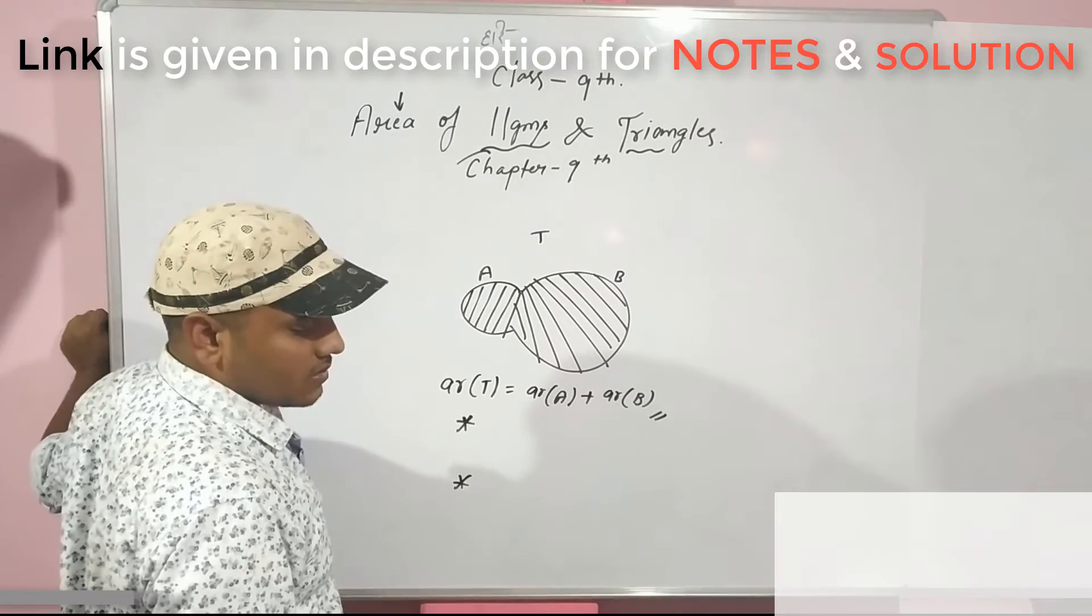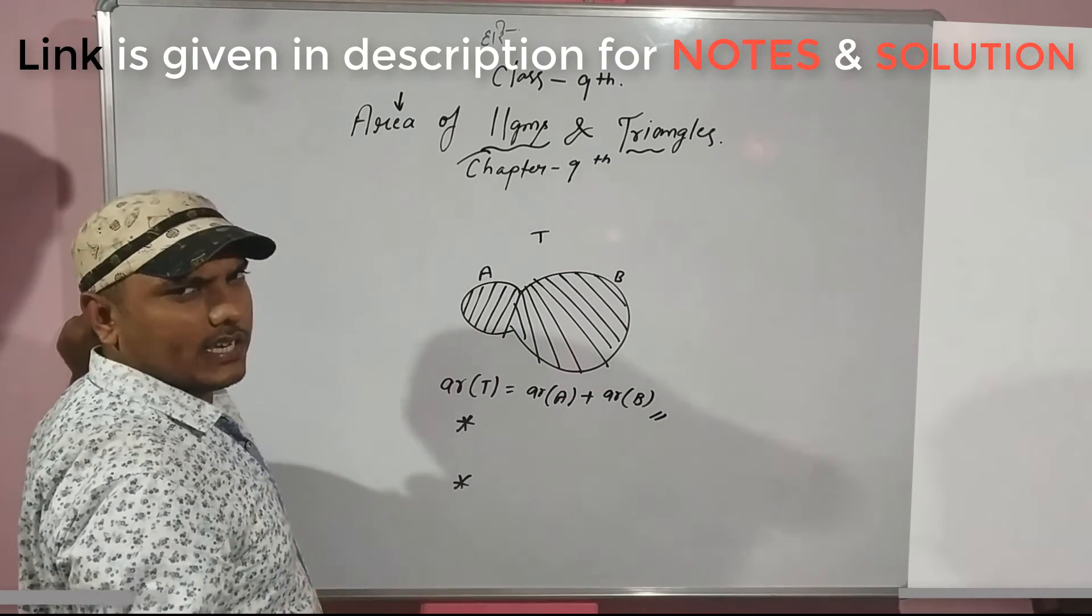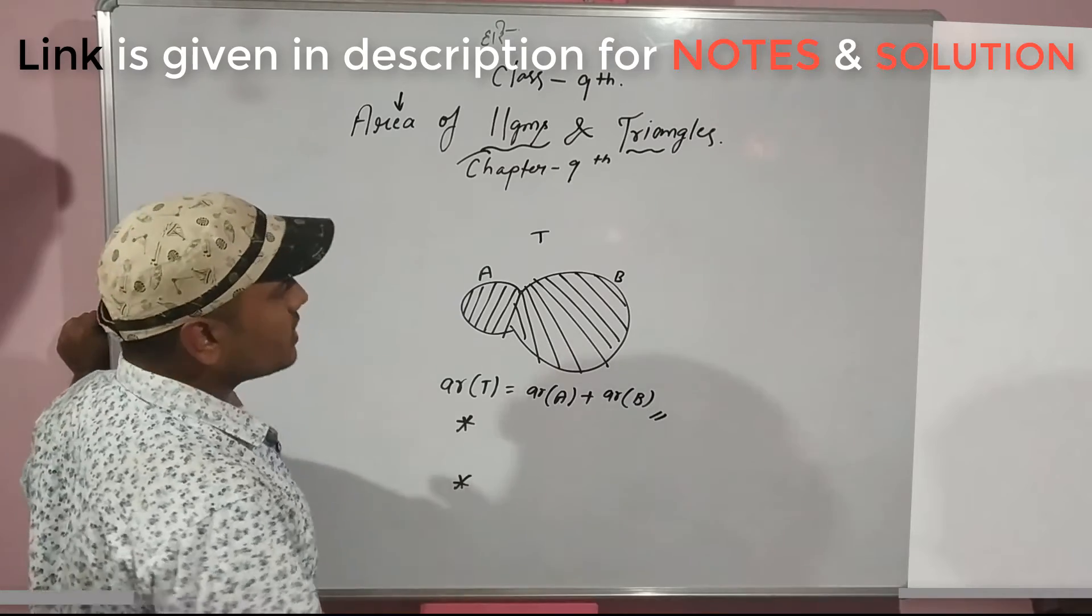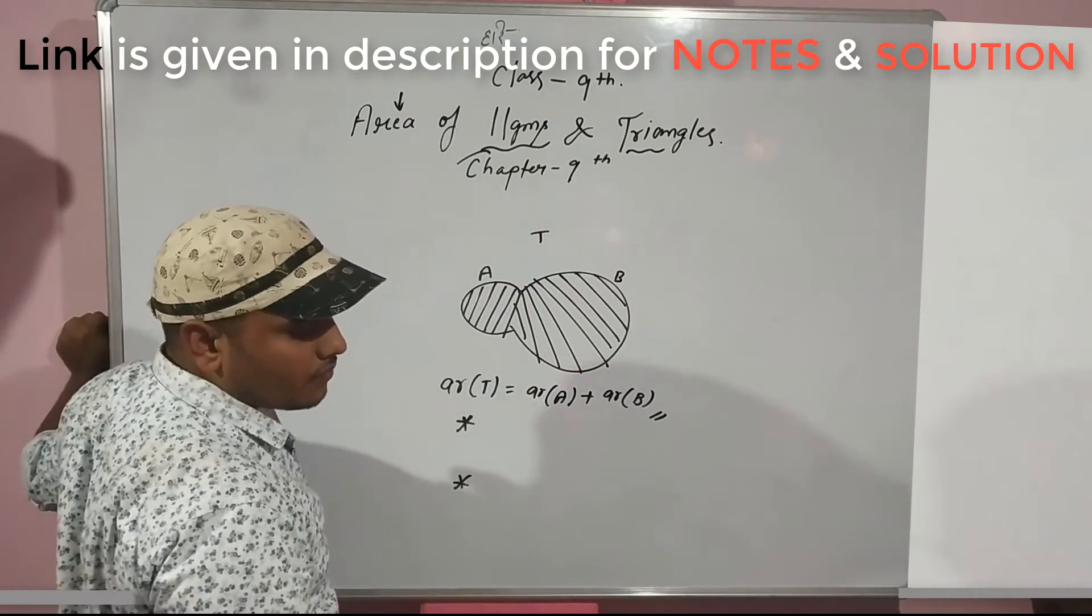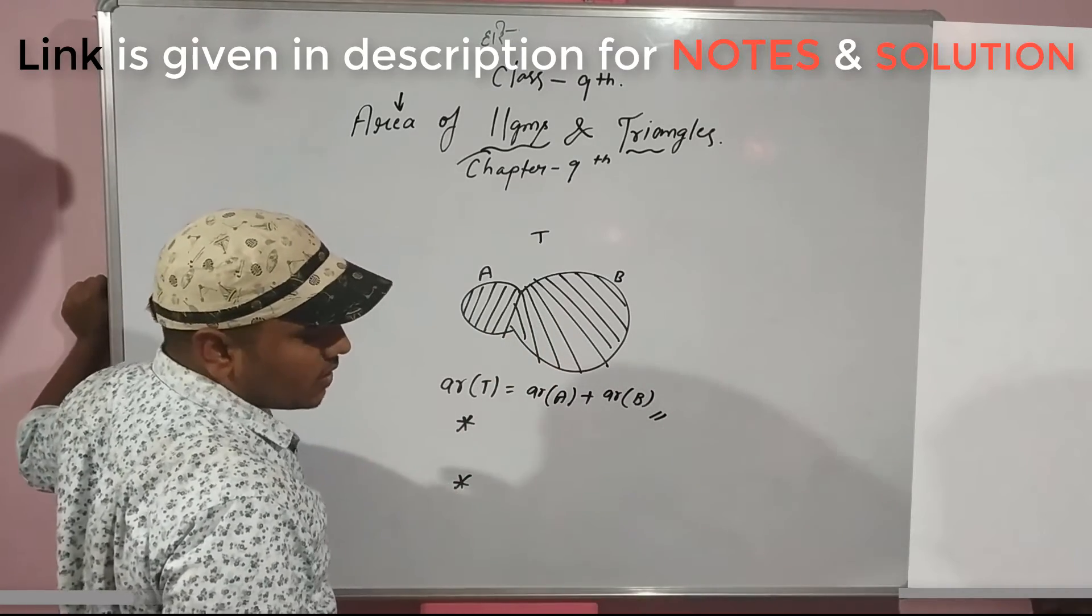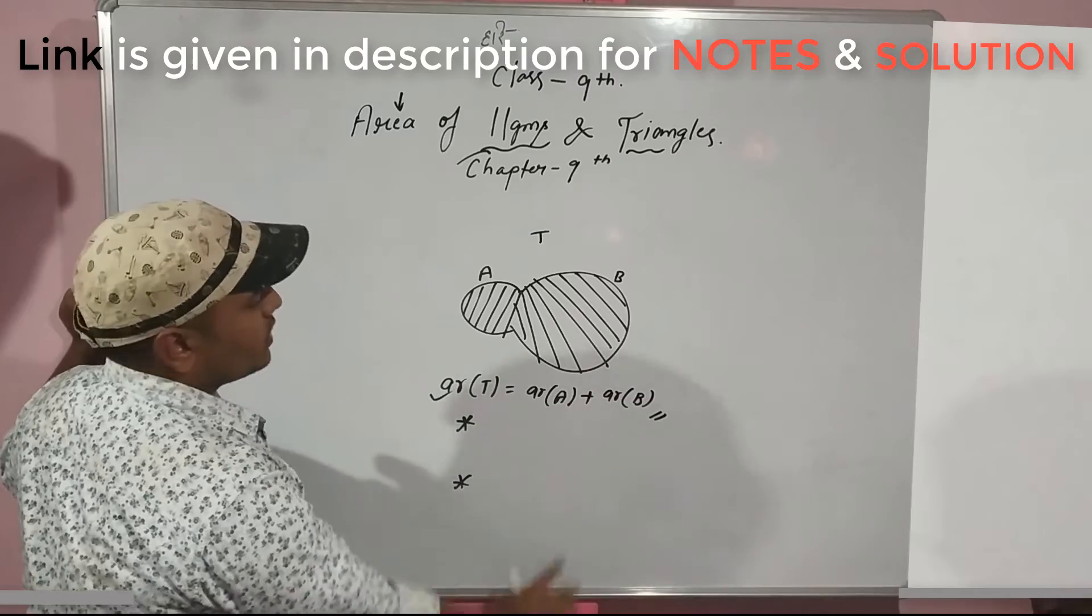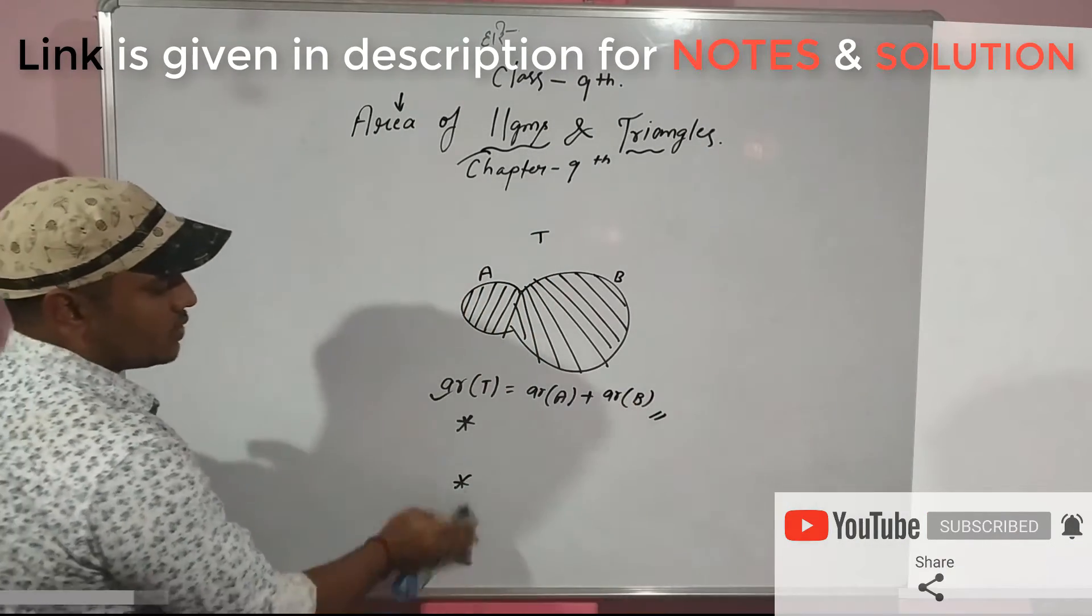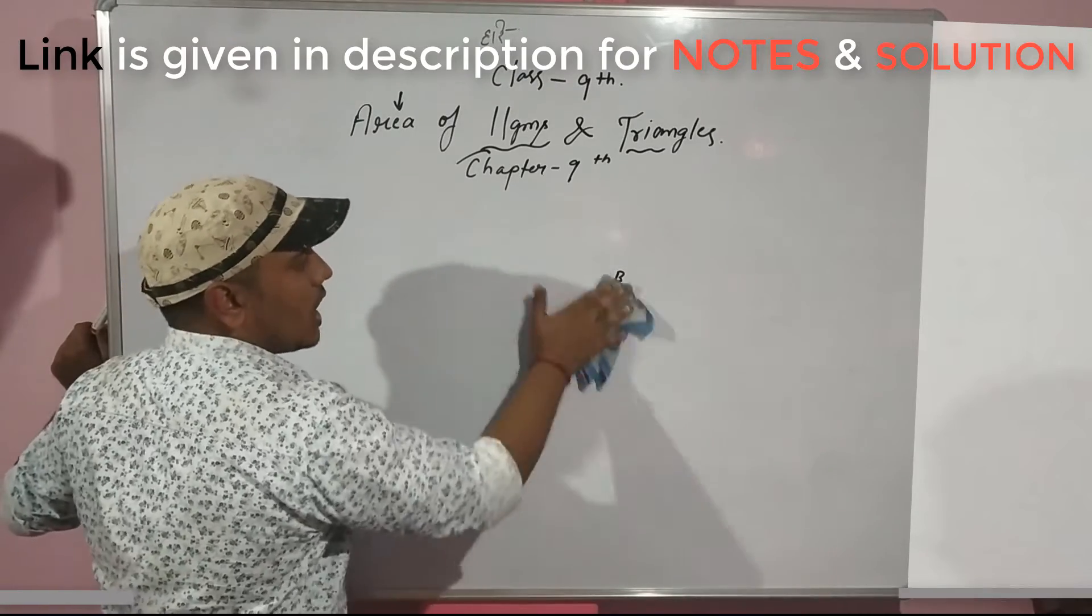The first statement: If A and B are two congruent figures, then their areas are equal. This is what we learned earlier. The second statement: If a planar region formed by figure T is made up of two non-overlapping planar regions formed by figures A and B, then area of T equals area of A plus area of B. These are the two statements. You can see the notes. Exercise NCERT questions are there. If you have a question, comment.